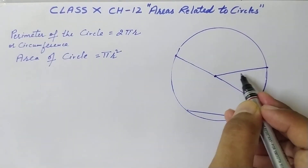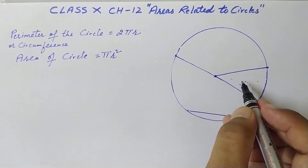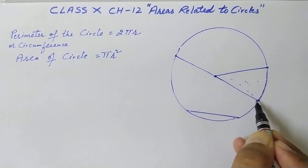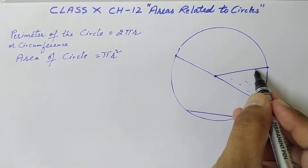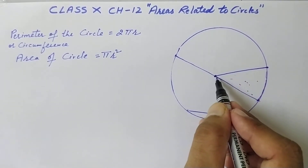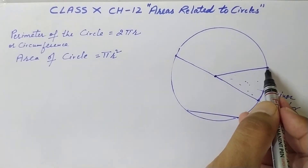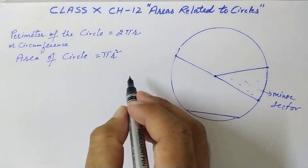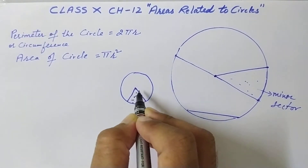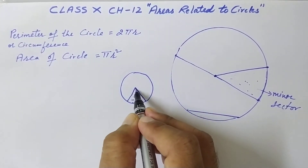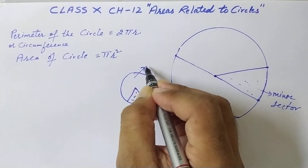Now, the area bounded by two radii and the corresponding arc is called a sector. If the area is bounded by two radii and the minor arc, it is called a minor sector. The remaining area bounded by two radii and the major arc is called the major sector.